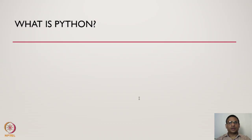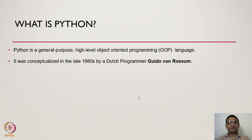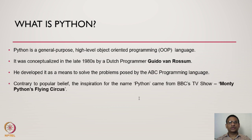What is Python? Python is a general purpose, high level, object oriented programming language. It was conceptualized in the late 1980s by a Dutch programmer Rudolf van Roesum. He developed it as a means to solve the problems posed by the ABC programming language. Contrary to popular belief, the inspiration for Python came from BBC's TV show Monty Python's Flying Circus.